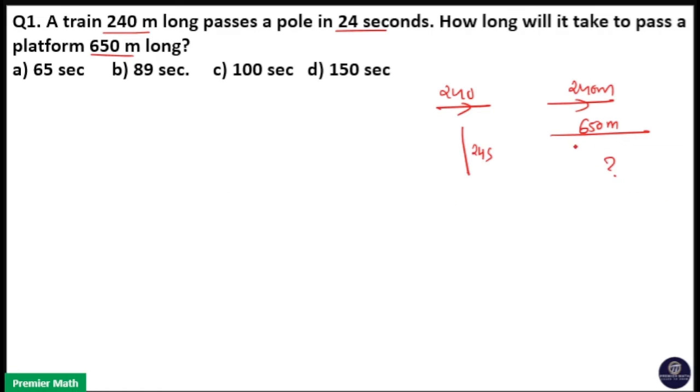So we need to find out the time to cross this platform. Here speed of train is equal to distance by time.